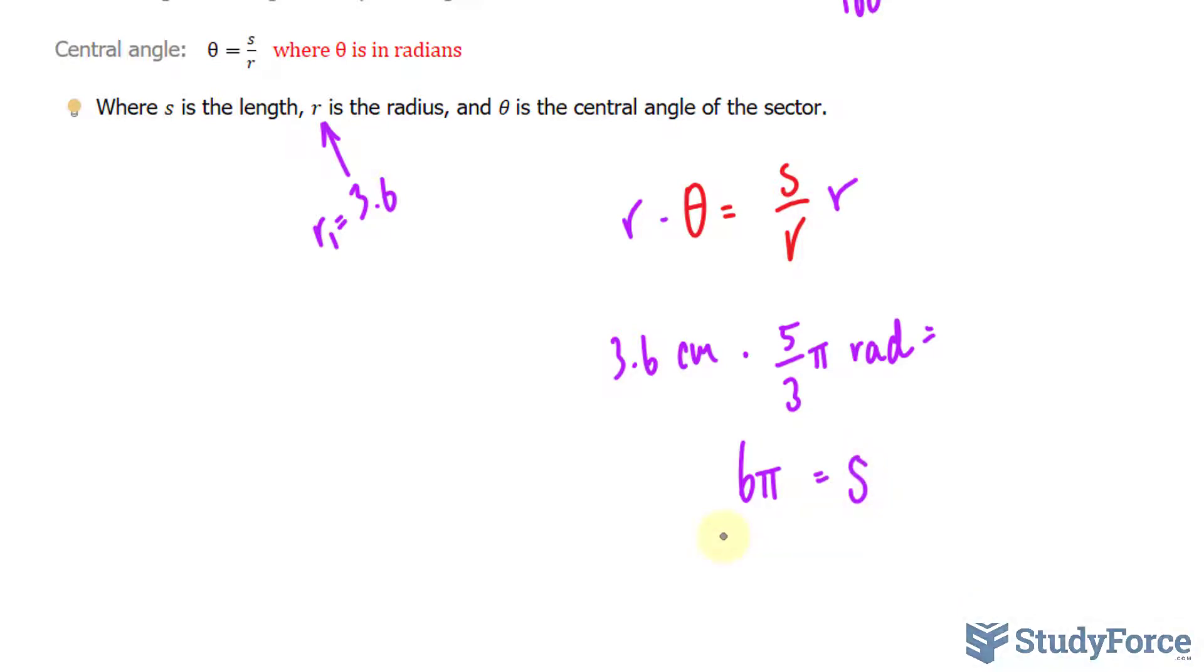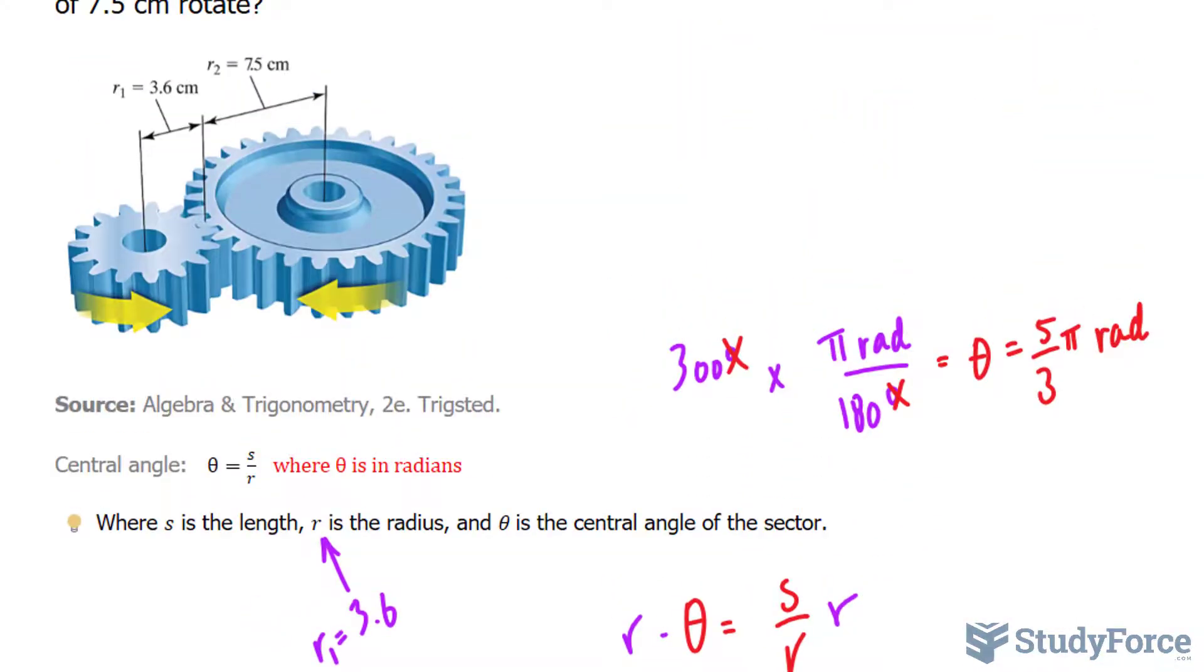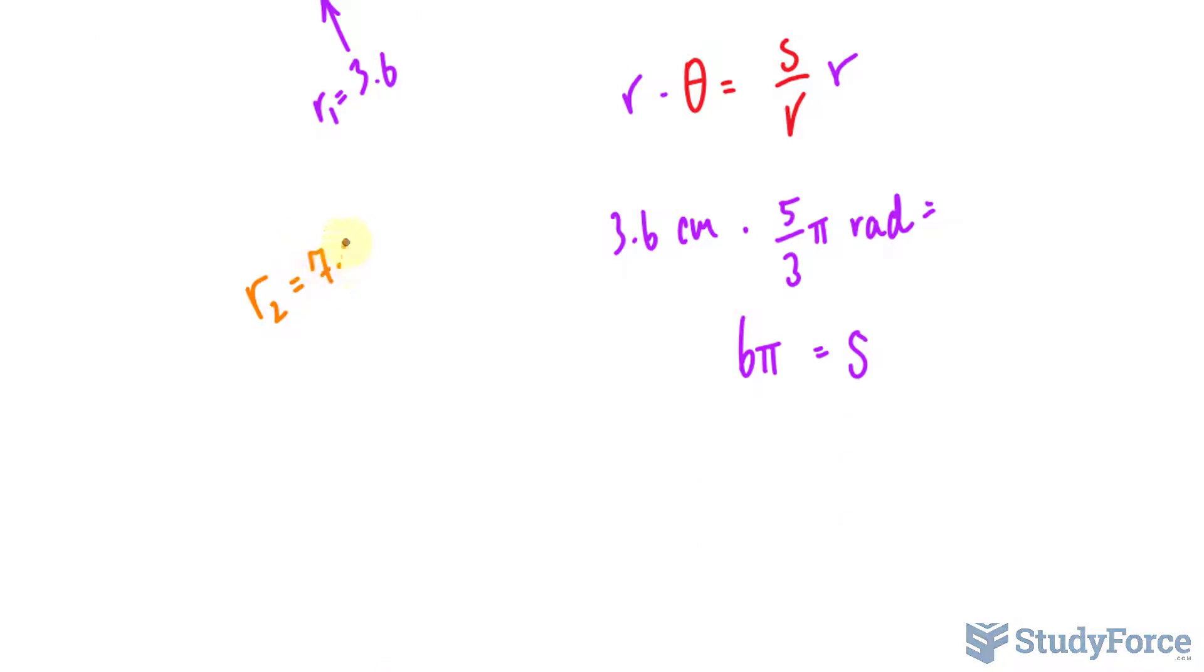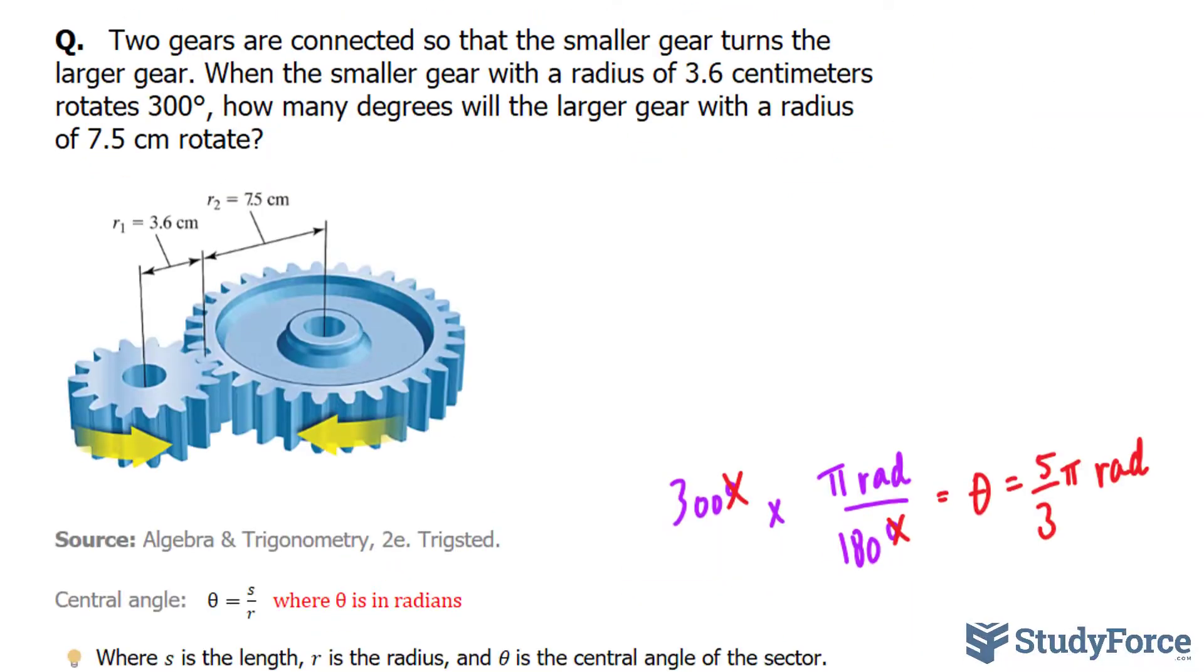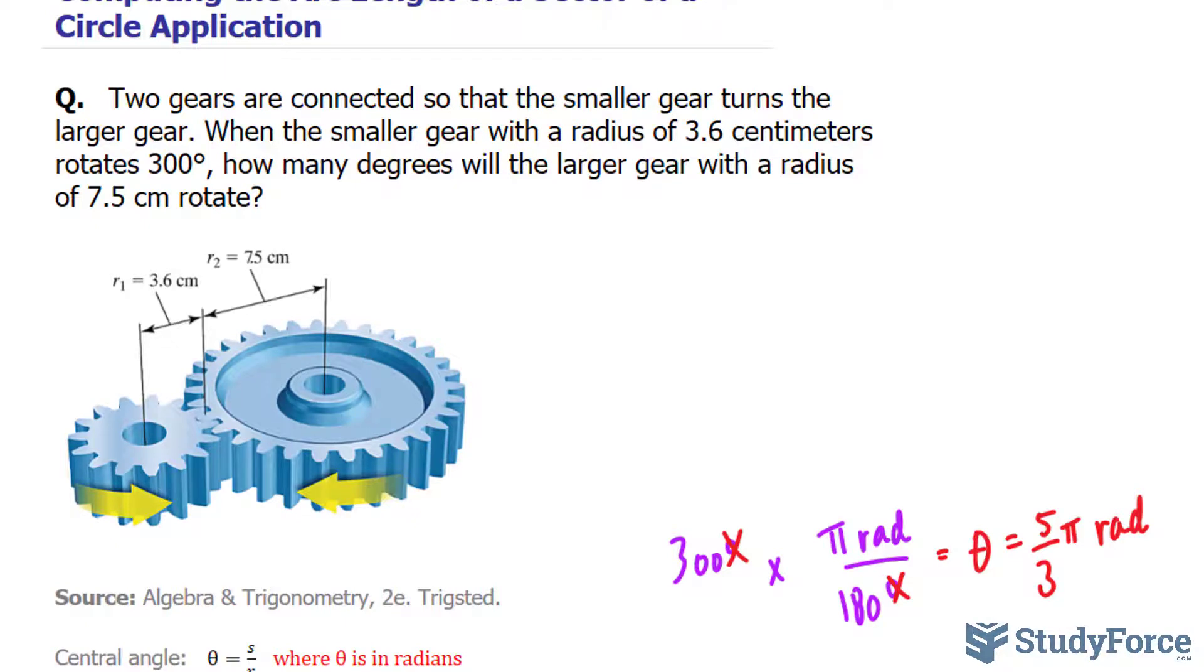Once again, we will use this formula. And given that S happened to be 6 pi, that's actually shared amongst both gears because they're connected. So this will also be the S value for gear 2, the larger one. And the larger gear had a radius, according to the illustration, of 7.5. Remember what they're asking: how many degrees will the larger gear with a radius of 7.5 rotate?